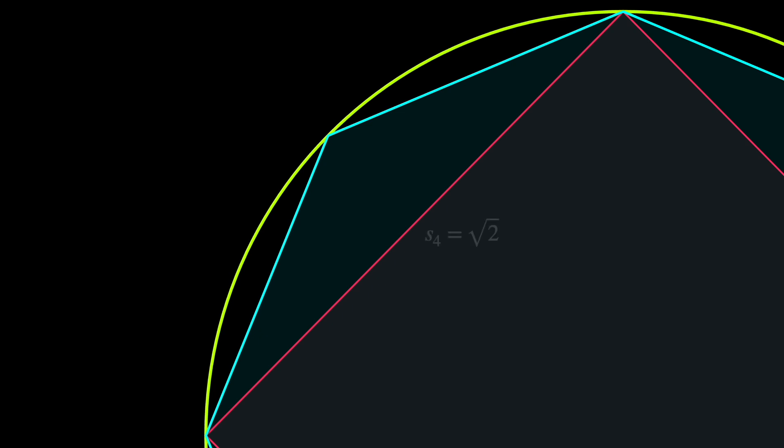Let us zoom in and consider this section. From above, the side S4 has length square root 2 and we want to find the sum of the two sides of the regular octagon. Since the octagon is regular, these two sides have the same length. Let us say it is S8.